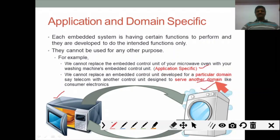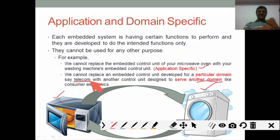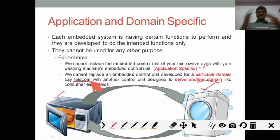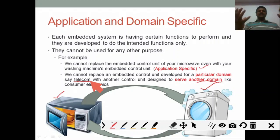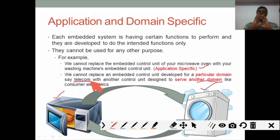Domain-specific refers to the fact that different domains exist — for example, telecom, automotive, aerospace, and mechatronics. There are many domains in embedded systems, and you cannot interchange or replace the embedded development, control units, or other characteristics across domains. Each is unique and specific to its application and domain.